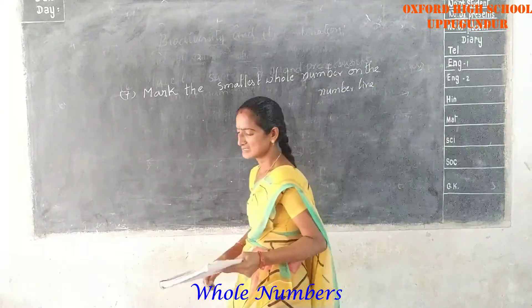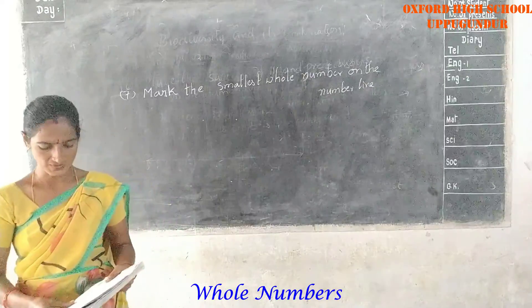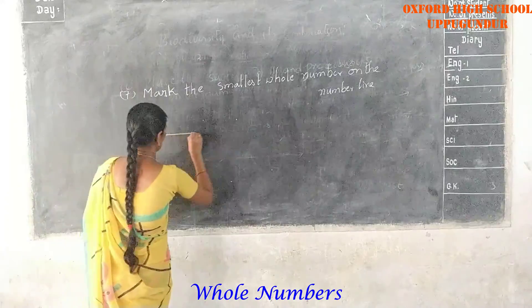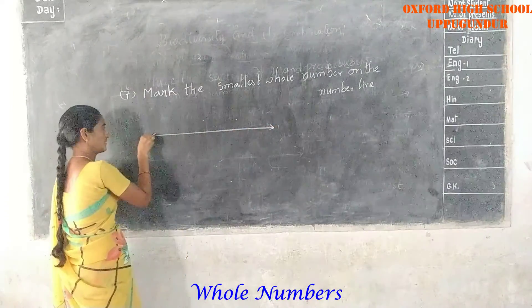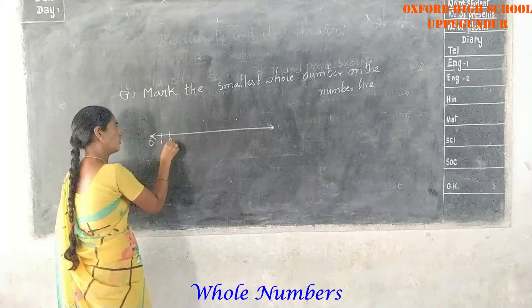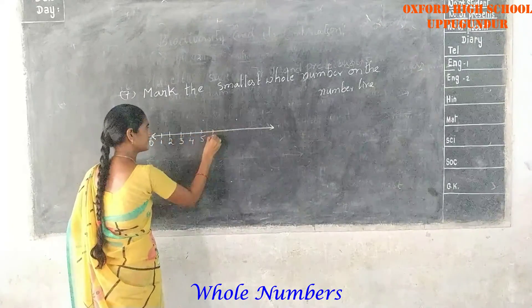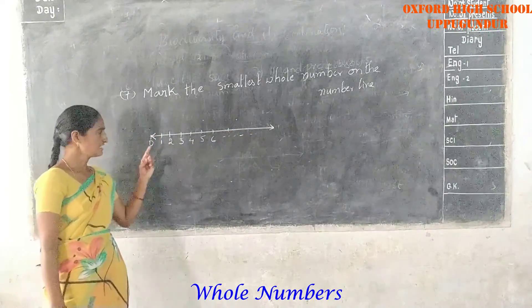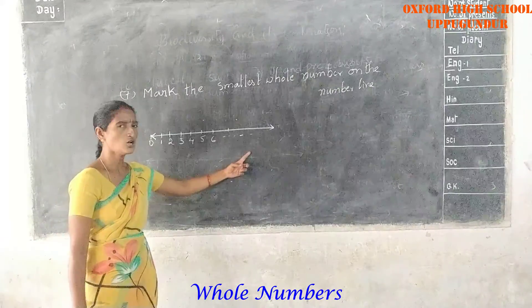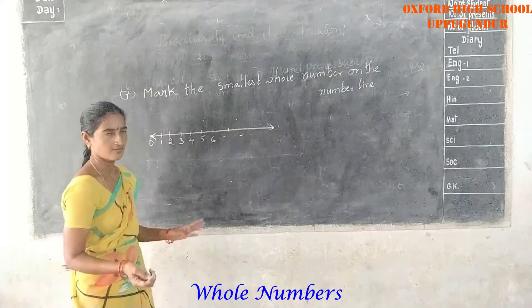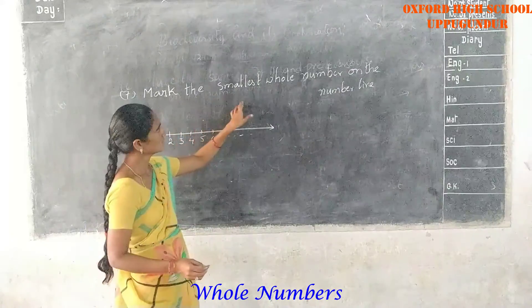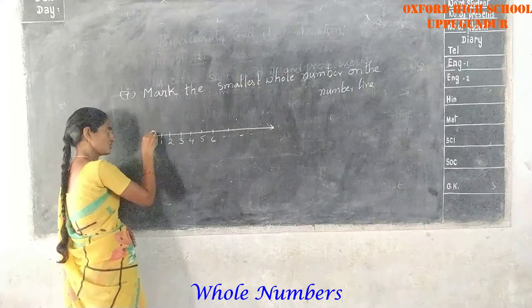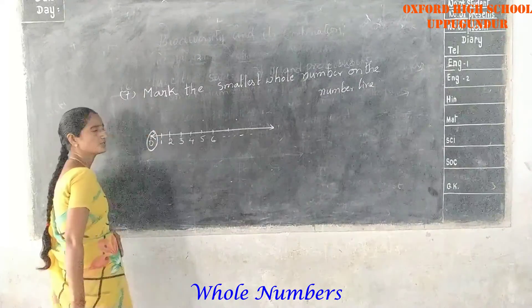Mark the smallest whole number on the number line. This is the whole number line. The smallest whole number is 0, and the greatest whole number is not defined — it goes on forever. Mark the smallest whole number, which is 0, as your answer.